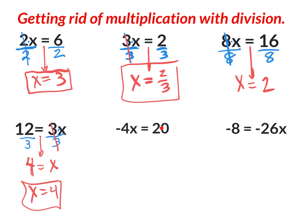The next one says negative four times x equals twenty. That negative belongs to the four — it's a negative four. Some people might think you'd add four to get rid of it, but this does not say x minus four. It says negative four times x, so what's happening is multiplication. To get rid of the multiplication of negative four you do the inverse: divide by negative four on both sides. Negative four divided by negative four is positive one, so you just have x. And twenty divided by negative four is negative five.